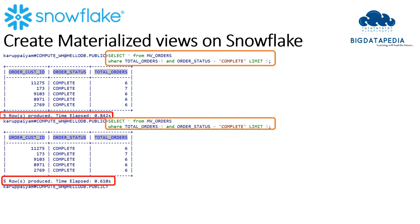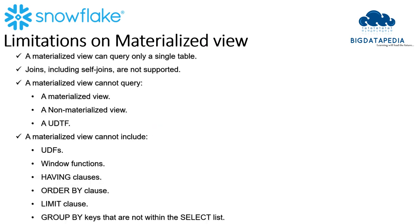From this we can understand that a materialized view stores the cache from the previous outcome. From the example we can understand that a materialized view is a little more powerful than a non-materialized view, even though materialized views have some limitations. Materialized views can only query on a single table and there are no joins supported. Also, a materialized view cannot be used based on another materialized view or non-materialized view. Additionally, there is no UDF, window function, ORDER BY, or HAVING supported in materialized views.